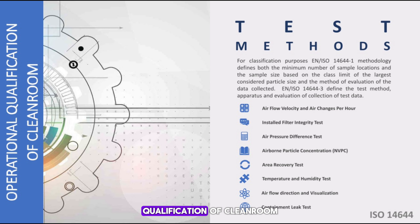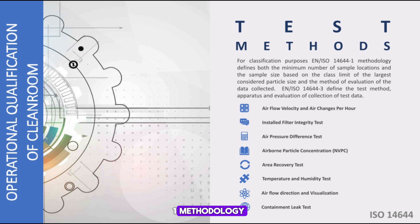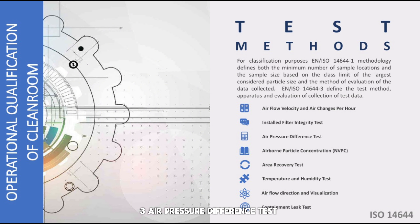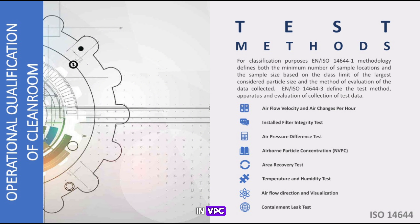Test methods for operational qualification of a clean room follow EN/ISO 14644-1 methodology for classification, which defines minimum sample locations and sample size. EN/ISO 14644-3 defines the test method, apparatus and evaluation. Tests include: airflow velocity and air changes per hour, installed filter integrity test, air pressure difference test, airborne particle concentration (NPC), area recovery test, temperature and humidity test, airflow direction and visualization, and containment leak test.